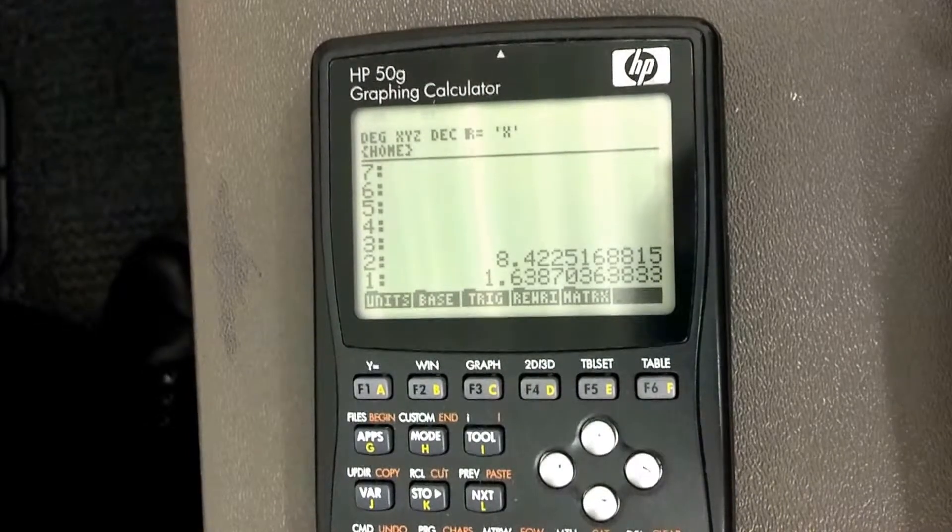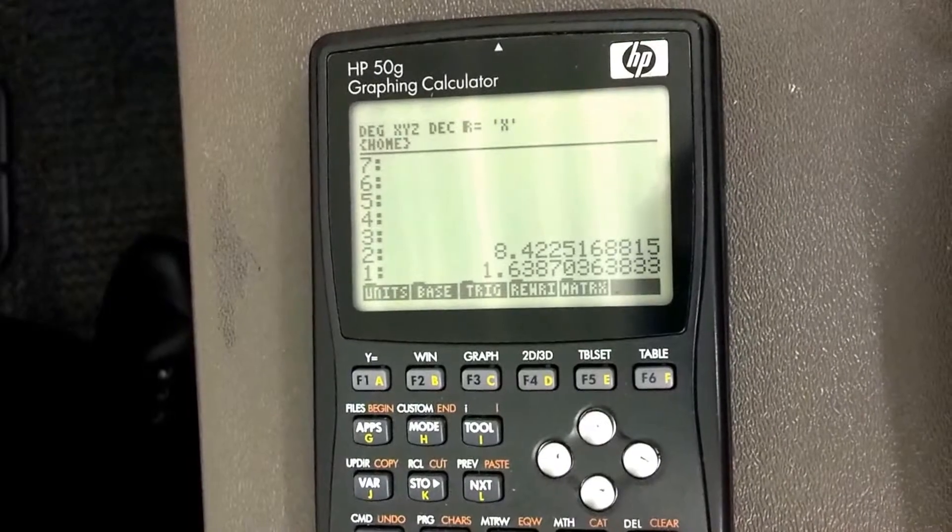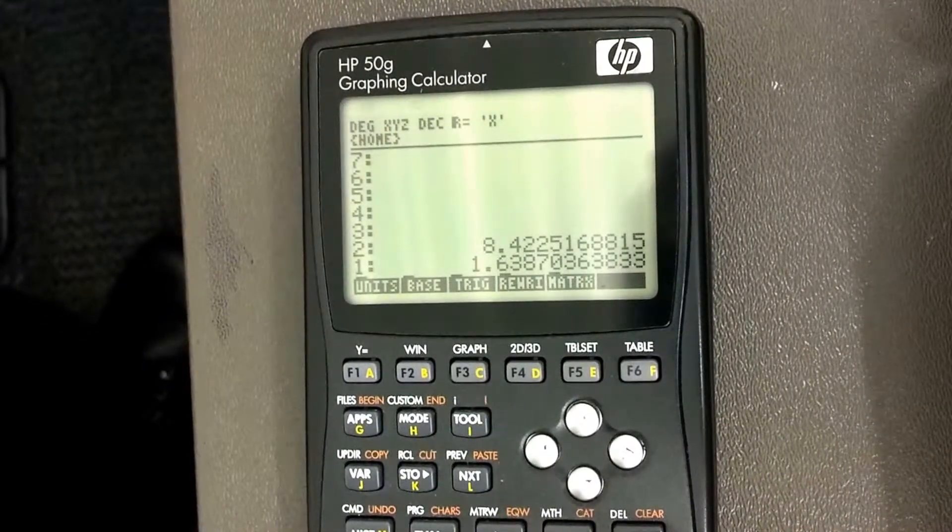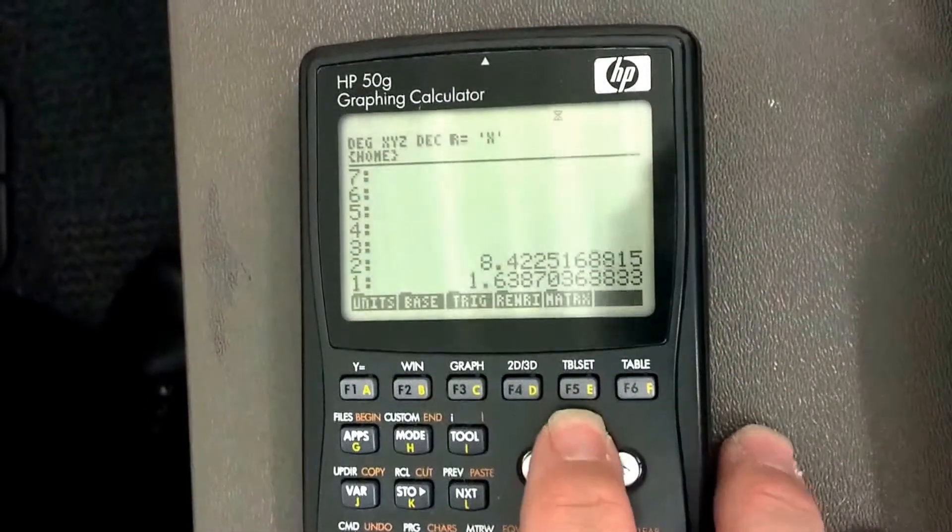And so if I want to convert that back to... That's polar. If I need to convert that to rectangular, I need to do this. Let's see. All right, let's come up here.